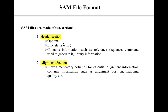The header section is optional — it may or may not be present in a given SAM file. If present, each line of the header section starts with the '@' symbol. The header section contains information about the reference sequence, the command used to generate the SAM file, library information, and experimental conditions. The alignment section contains the actual alignment information — for each read there is one line, so 1 million reads produce 1 million lines. Alignment information is stored in 11 mandatory columns containing alignment positions, mapping quality, and other essential details.